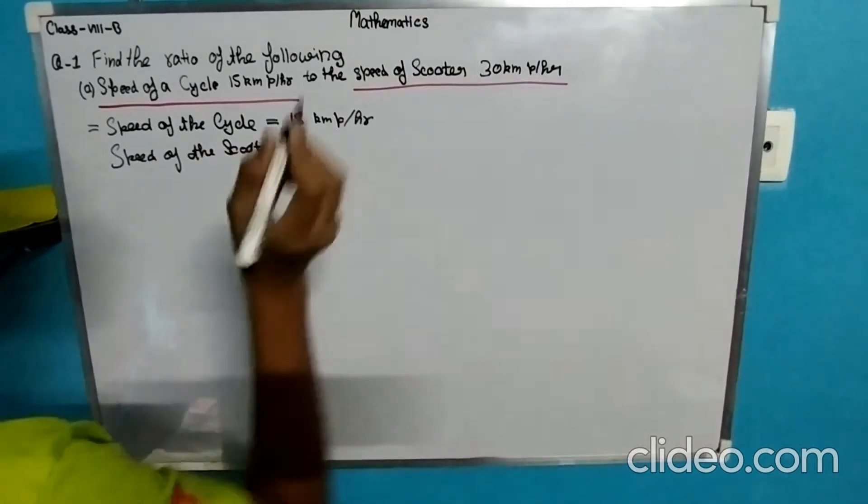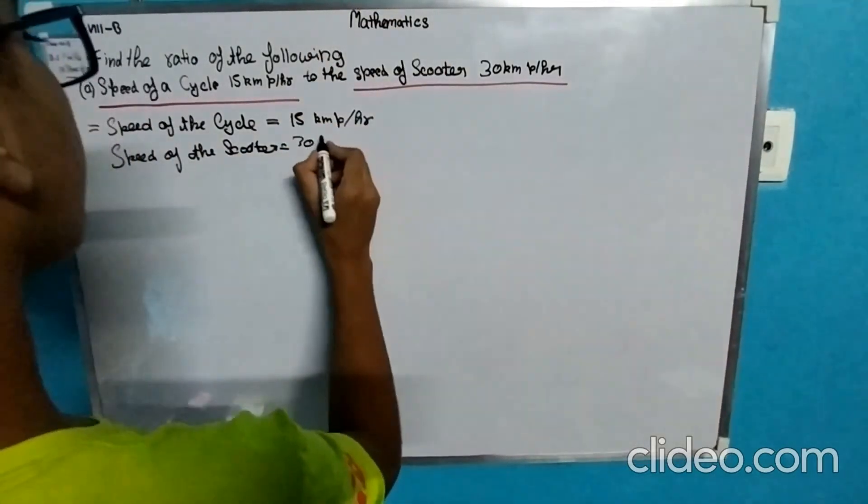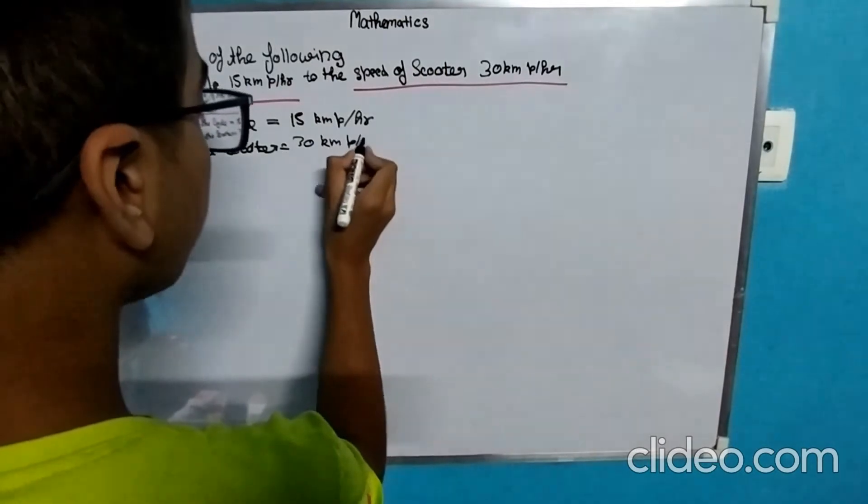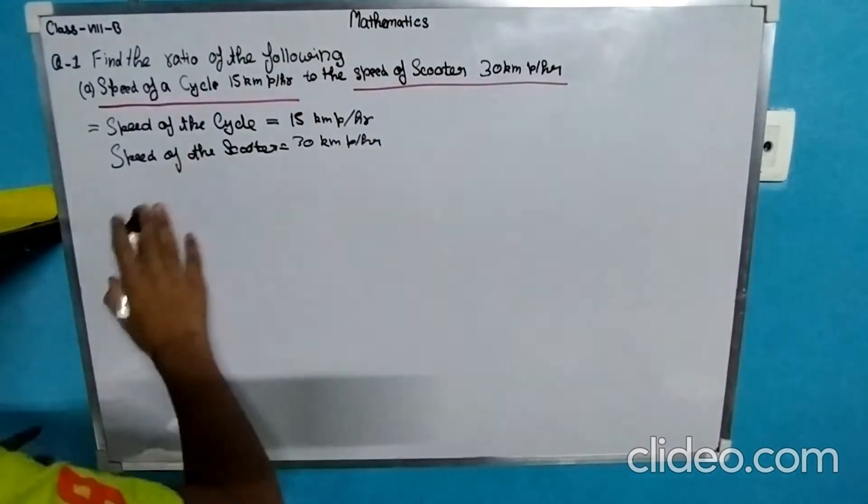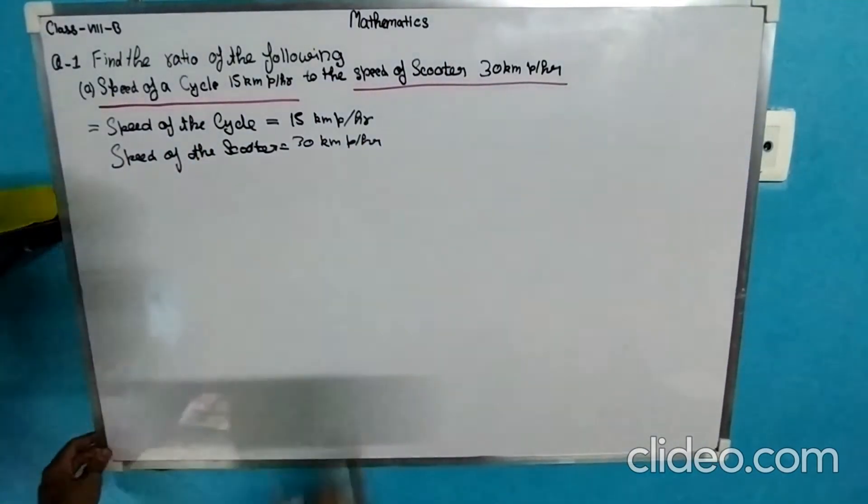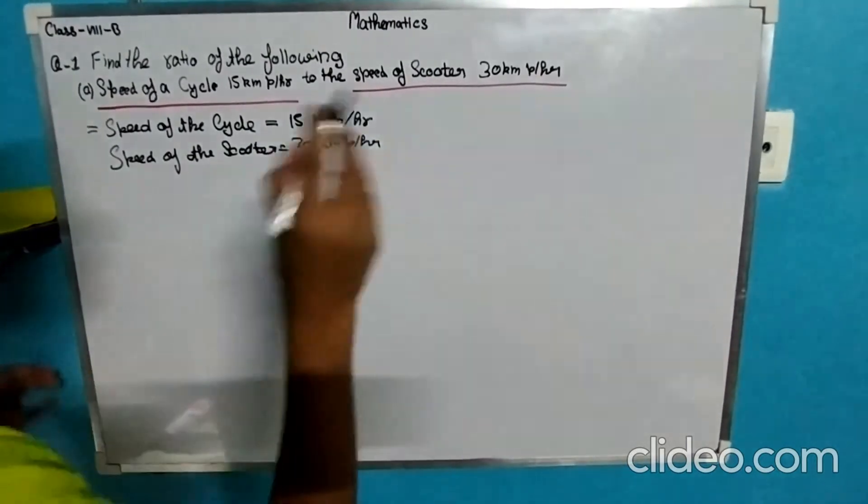scooter equals to 30 km per hour. So these are the values we have written, and after that we are going to solve.